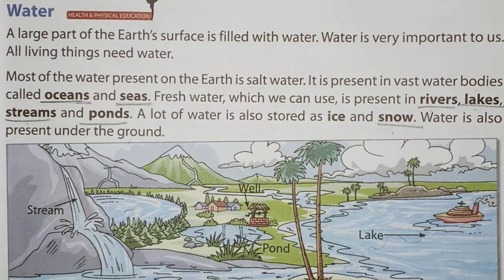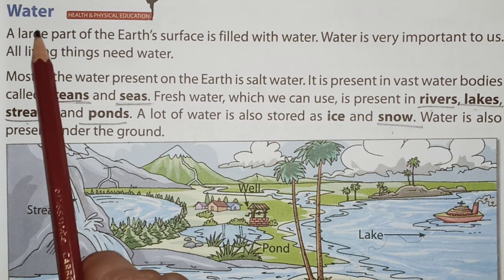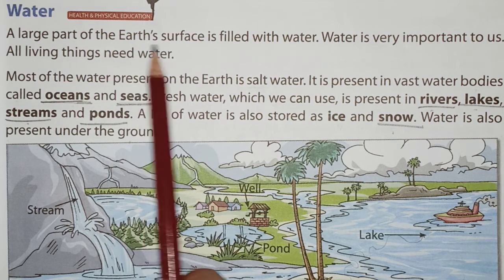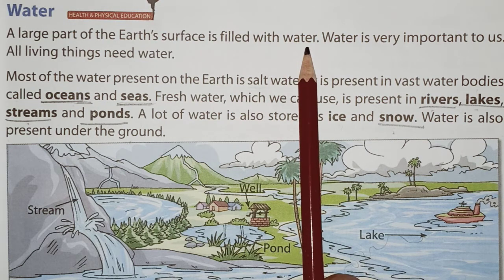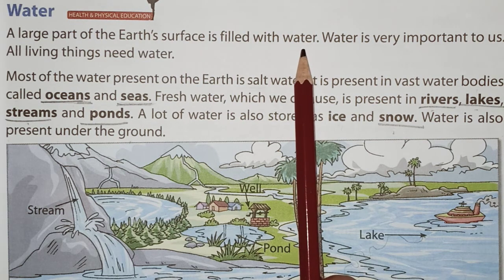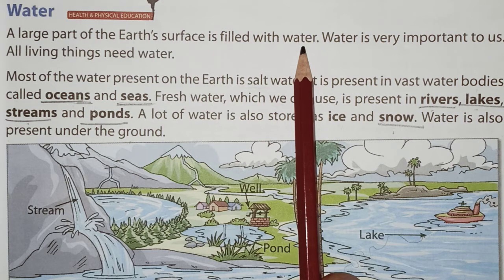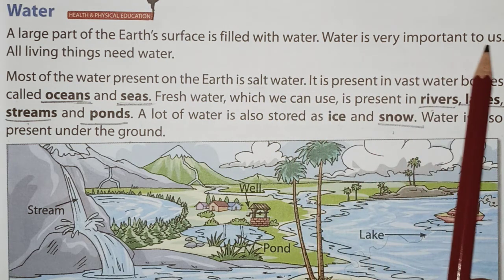That was about the landforms on the Earth. Now let's see the next part: water. A large part of the Earth's surface is filled with water. The Earth is made up of land and water, and we have the larger part made up of water. When you see the Earth from space it looks blue, and our Earth is also known as the blue planet because of the large quantity of water on its surface.